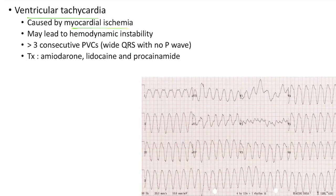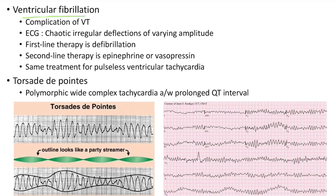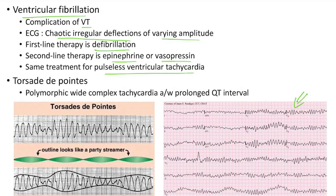Ventricular tachycardia can be caused by myocardial ischemia. It can lead to hemodynamic instability and is characterized by more than three consecutive wide QRS complexes with no P waves. Treatment: amiodarone, lidocaine and procainamide. Ventricular fibrillation can occur as a complication of VT; ECG shows chaotic irregular deflections of varying amplitude. First-line therapy for ventricular fibrillation (and pulseless VT) is defibrillation. Second-line therapy is epinephrine or vasopressin.